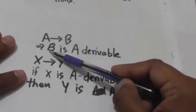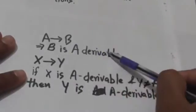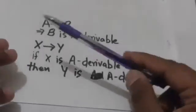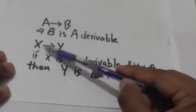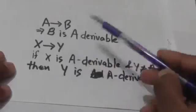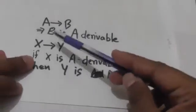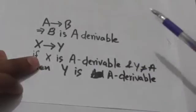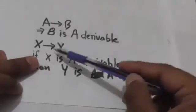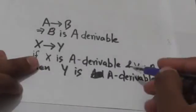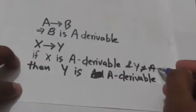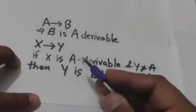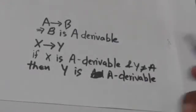Now, if there is a unit production A derives B, then we will say B is A-derivable. If there is a unit production X derives Y, and X is A-derivable, and variable Y is not equal to variable A, then variable Y is also A-derivable.